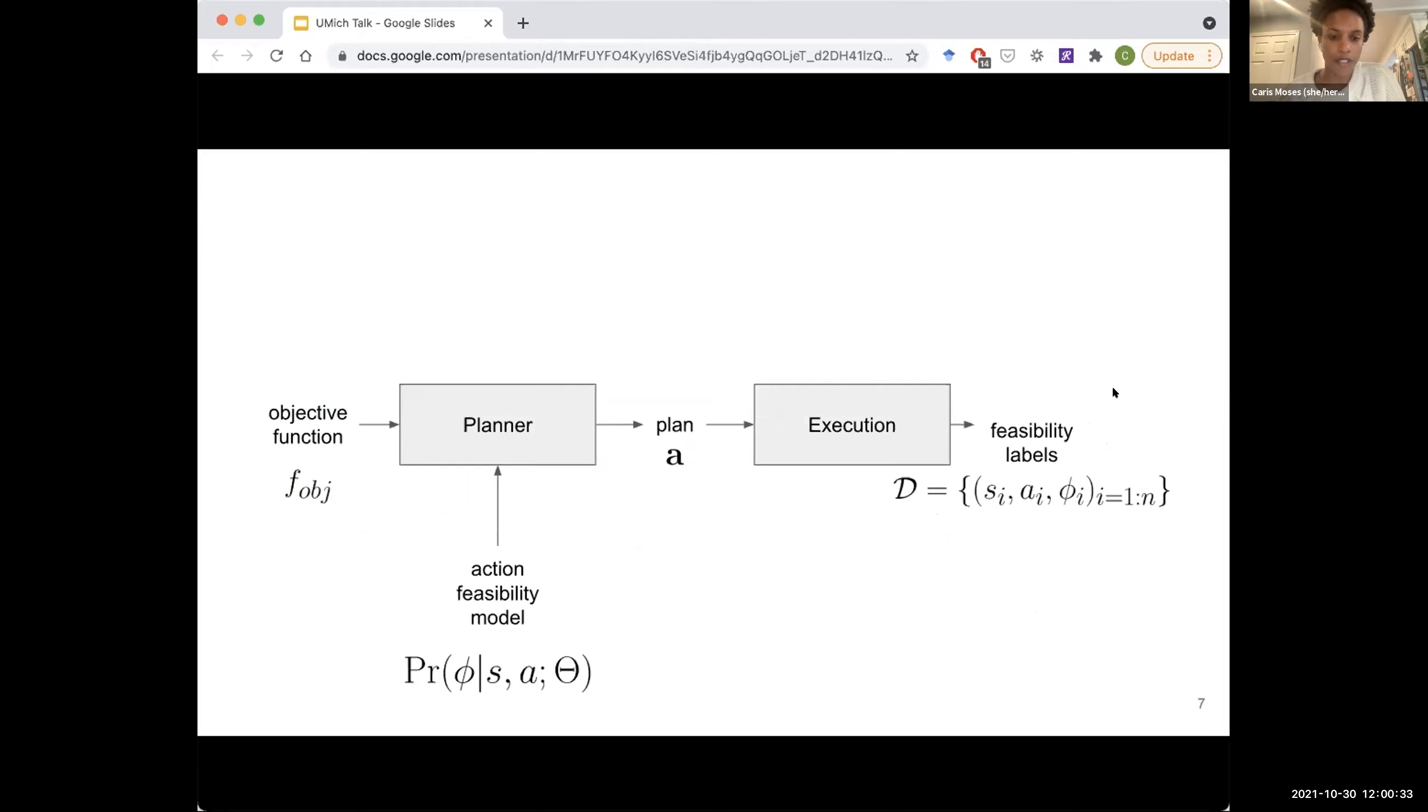So this is just a quick system overview. We have a planner which takes in some objective function as well as the feasibility model so that we can generate plans and know the feasibility of those plans. Then we pass the plan to an execution module, which then executes it and labels all of the actions the robot took and whether or not they were feasible. So there are two phases in the learning phase. The objective for the planner is some sort of information gain objective, which I'm not going to go into the details of, but it's trying to take action such that it can learn the best action feasibility model. And then at evaluation time, the objective is now a task objective. We're trying to maximize some reward.